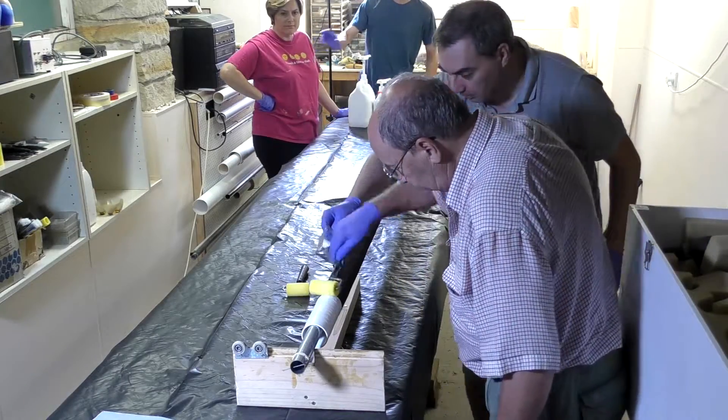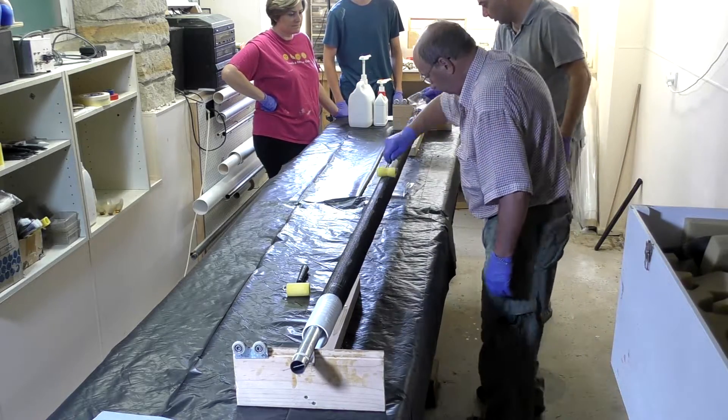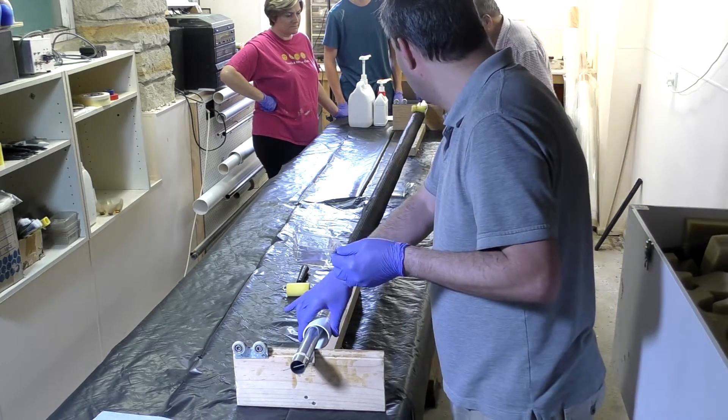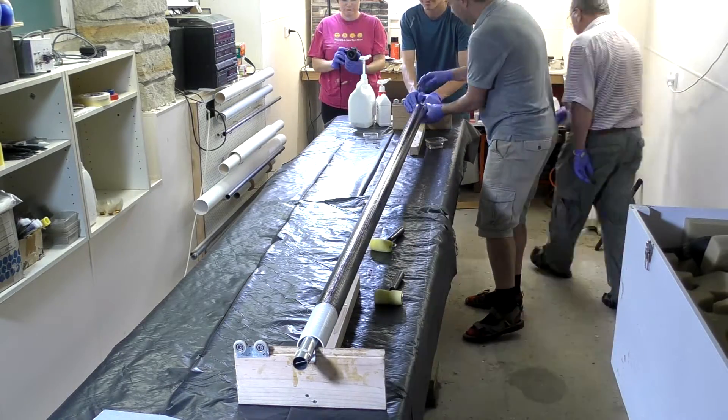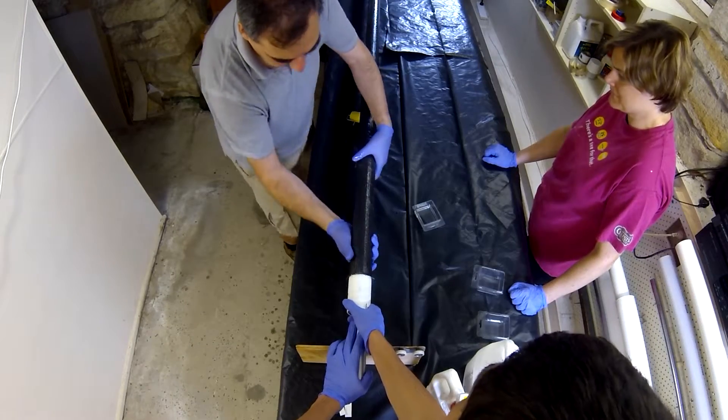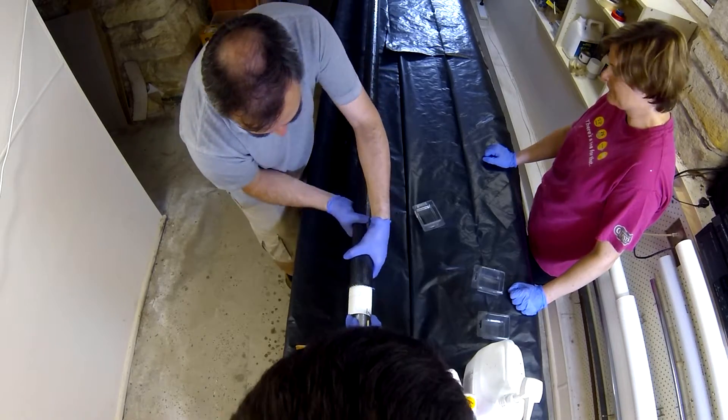We are always working away from the taped end to keep the sleeve stretched. When we have soaked the sleeve completely, we just use our hands to squeegee the epoxy out and also stretch the sleeve.